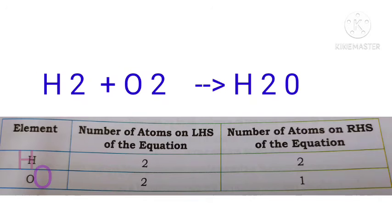Next, now count the number of atoms of each element present on both the sides, that is left hand side and right hand side of the equation.